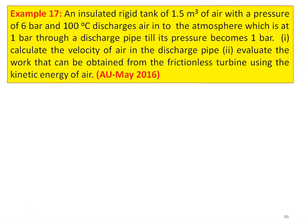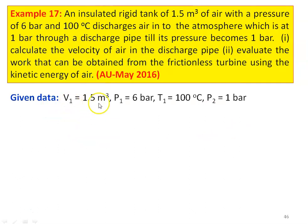There is a valve connecting the rigid tank and a pipe through which the air is discharged to a final pressure of 1 bar; initial pressure is 6 bar. When the air from the pipe is sent through a turbine, the air expands from 6 bar to 1 bar, resulting in an increase in kinetic energy which can run a turbine. Given data: V1 equal to 1.5 meter cube, P1 equal to 6 bar, T1 equal to 100 degree Celsius, and P2 equal to 1 bar. Work produced by the turbine is flow work: W equal to V1 into P1 minus P2, which is 1.5 into 6 minus 1 into 100 equal to 750 kilojoules.